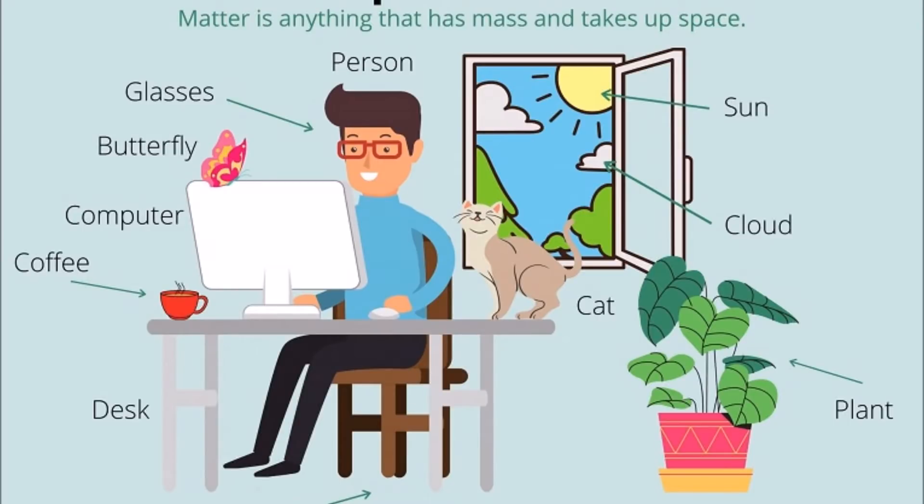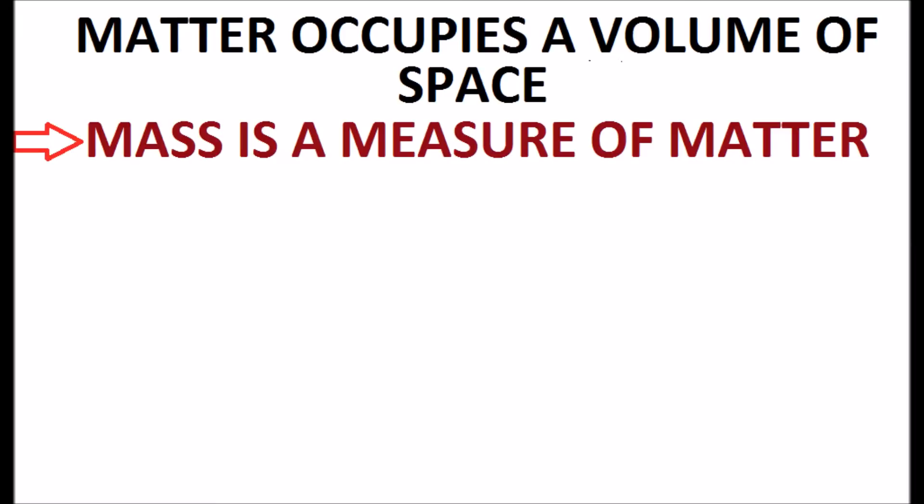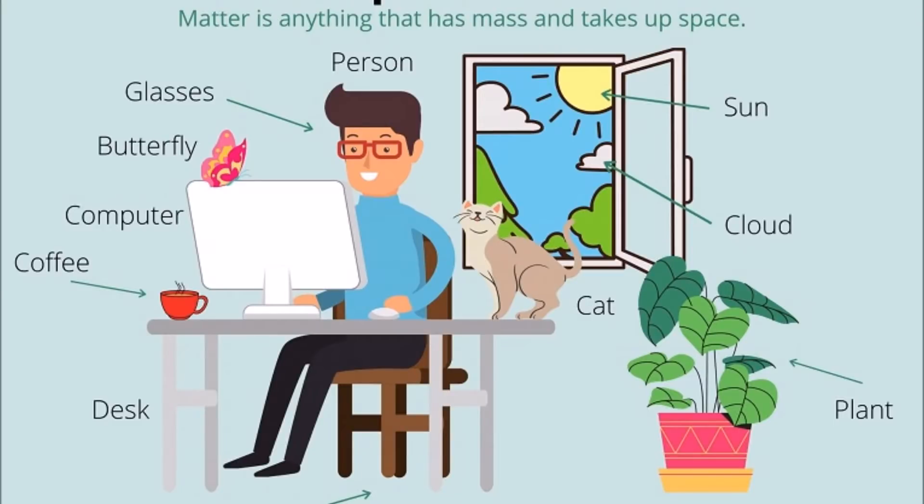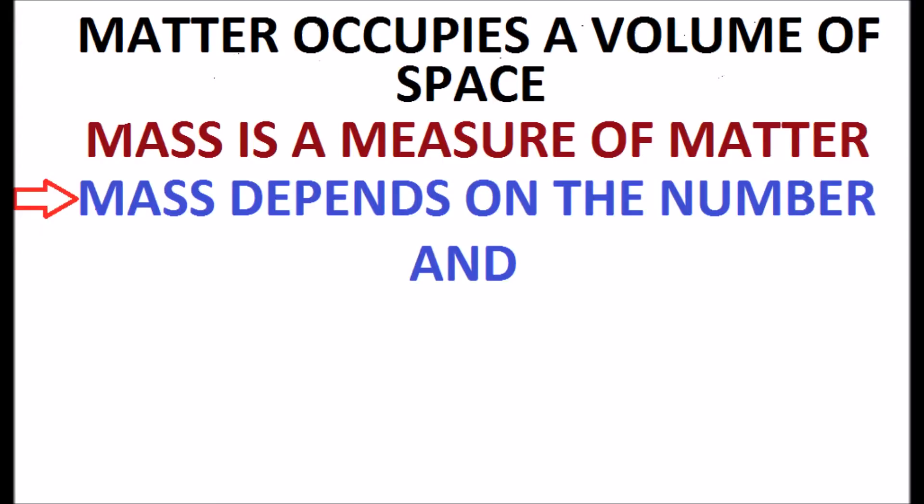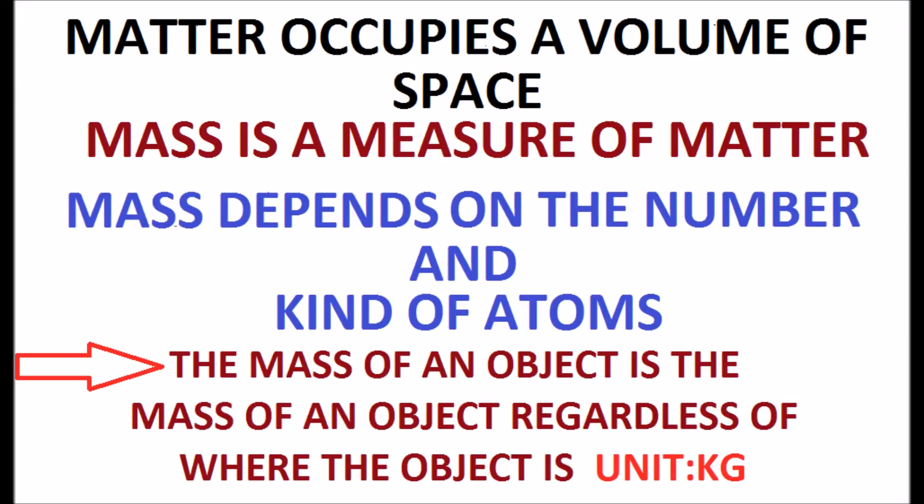Matter is anything that has mass and takes up space, occupying a volume. Mass is a measure of matter and depends on the number and kind of atoms. The mass of an object remains constant regardless of where the object is located. The unit for mass is kilograms.